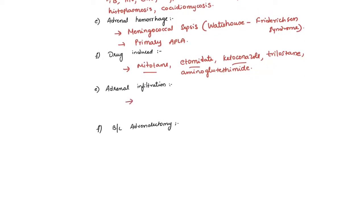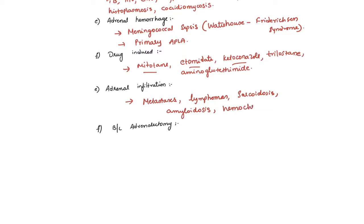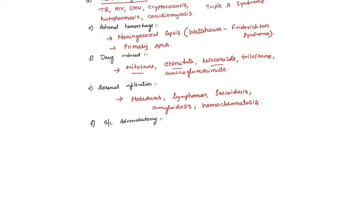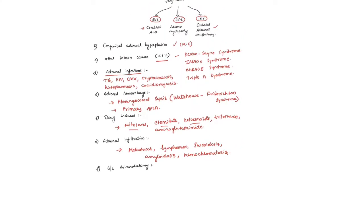Coming to adrenal infiltration — infiltrative disorders or metastasis. Remember, small metastasis could not cause adrenal insufficiency. To cause adrenal insufficiency, the metastasis should be bilateral and bulky; otherwise adrenal insufficiency is less common. Lymphomas are also infiltrative disorders, as are sarcoidosis, amyloidosis, and hemochromatosis. These are all various infiltrative disorders that can affect the adrenal gland and lead to adrenal insufficiency.